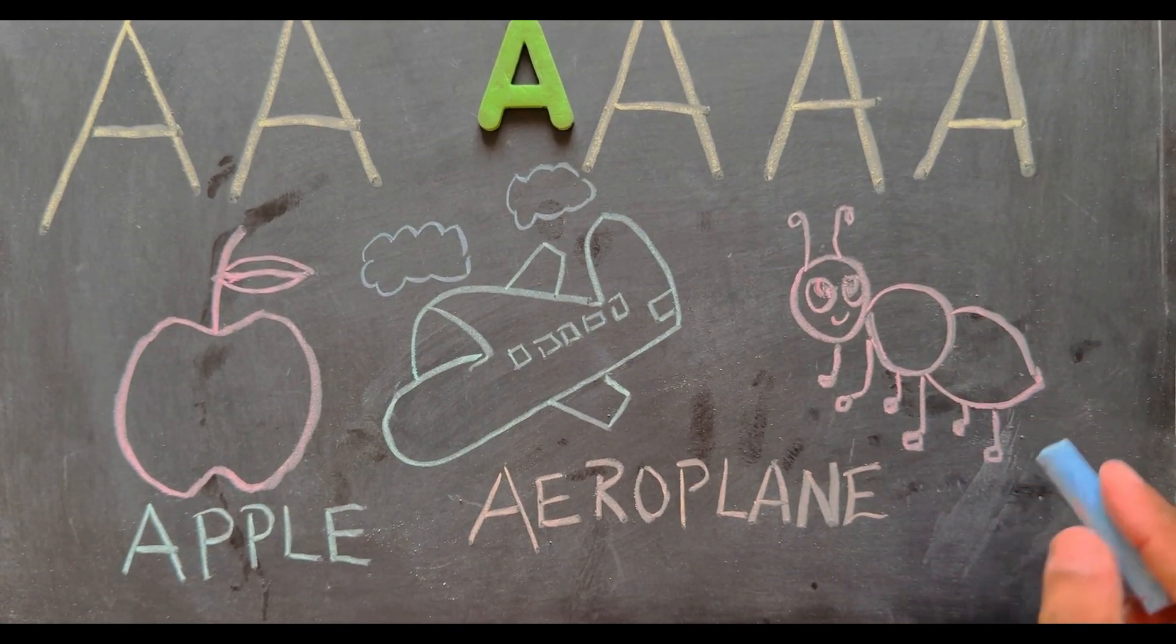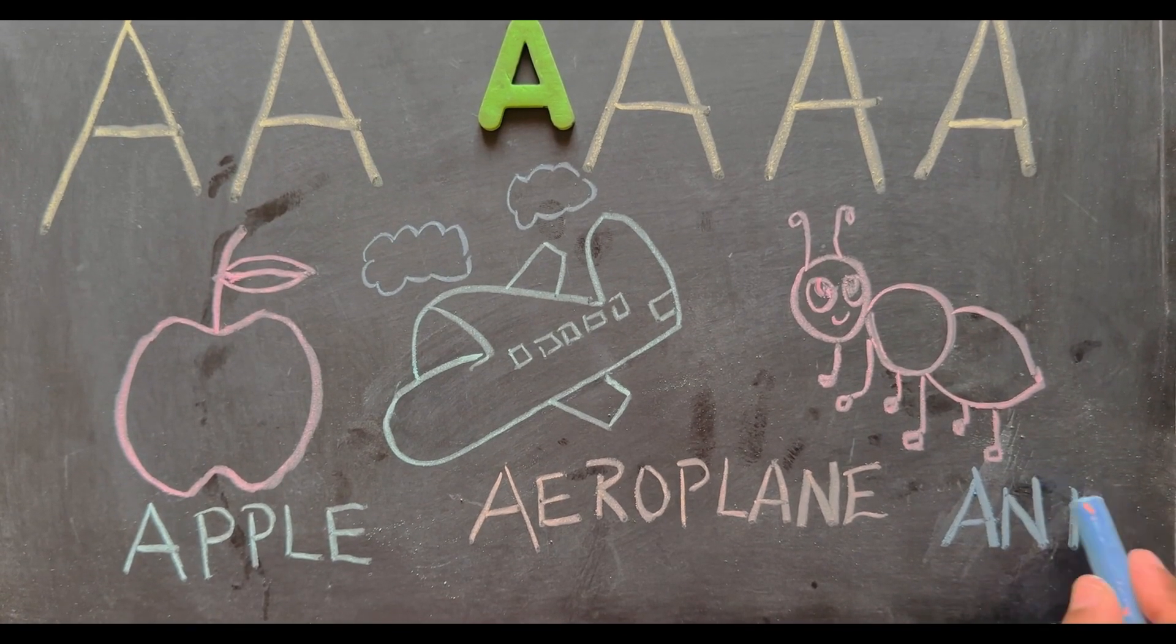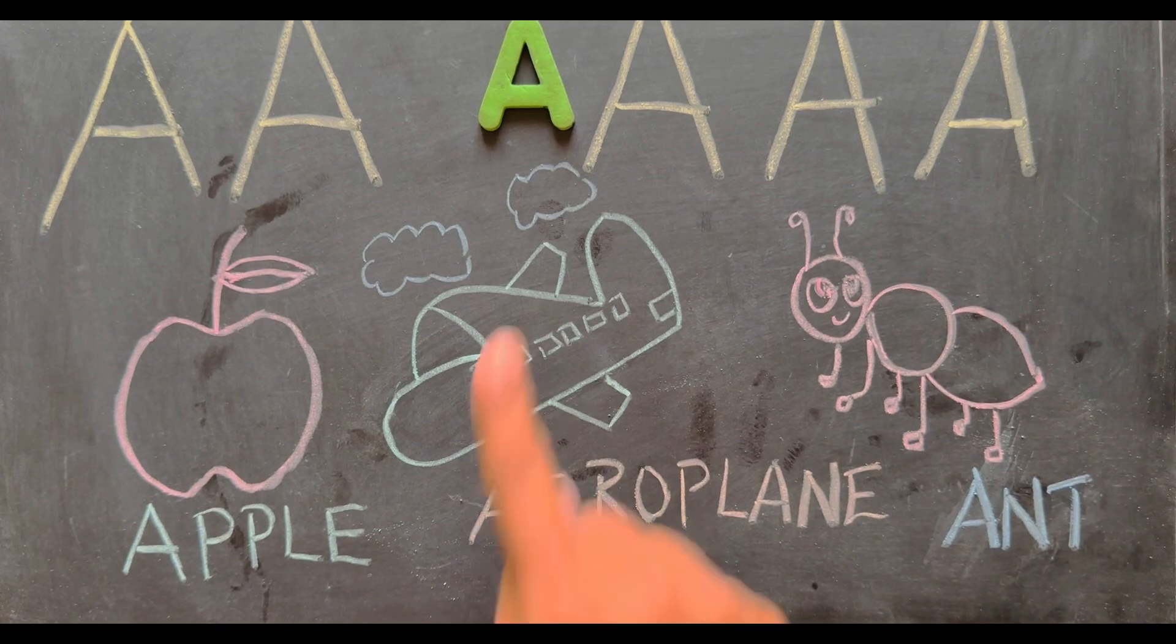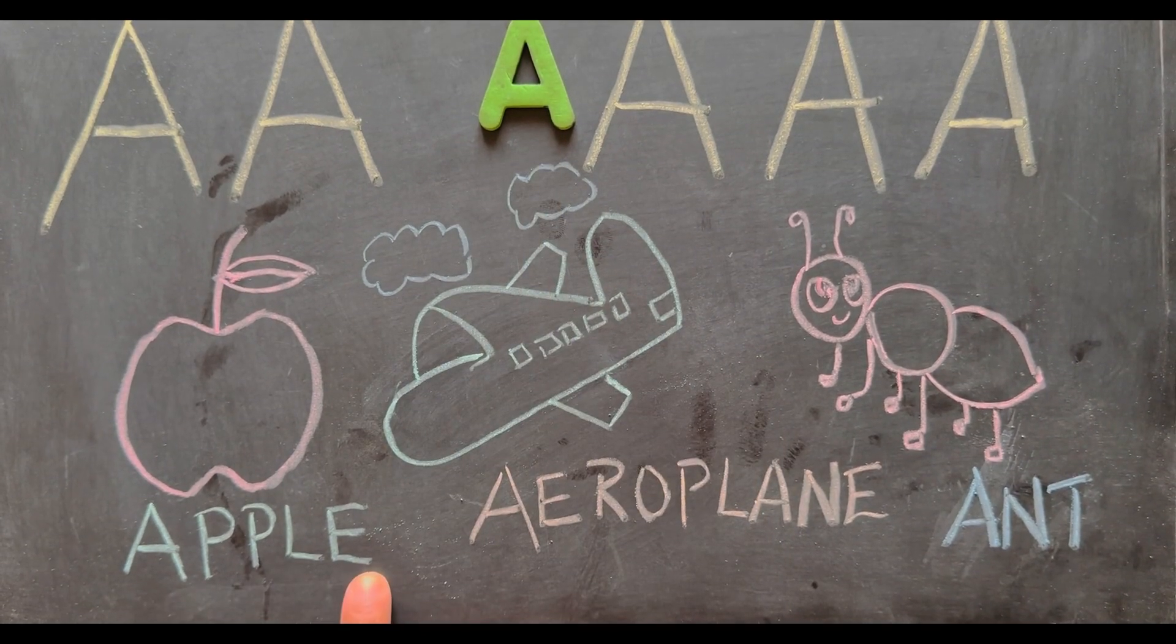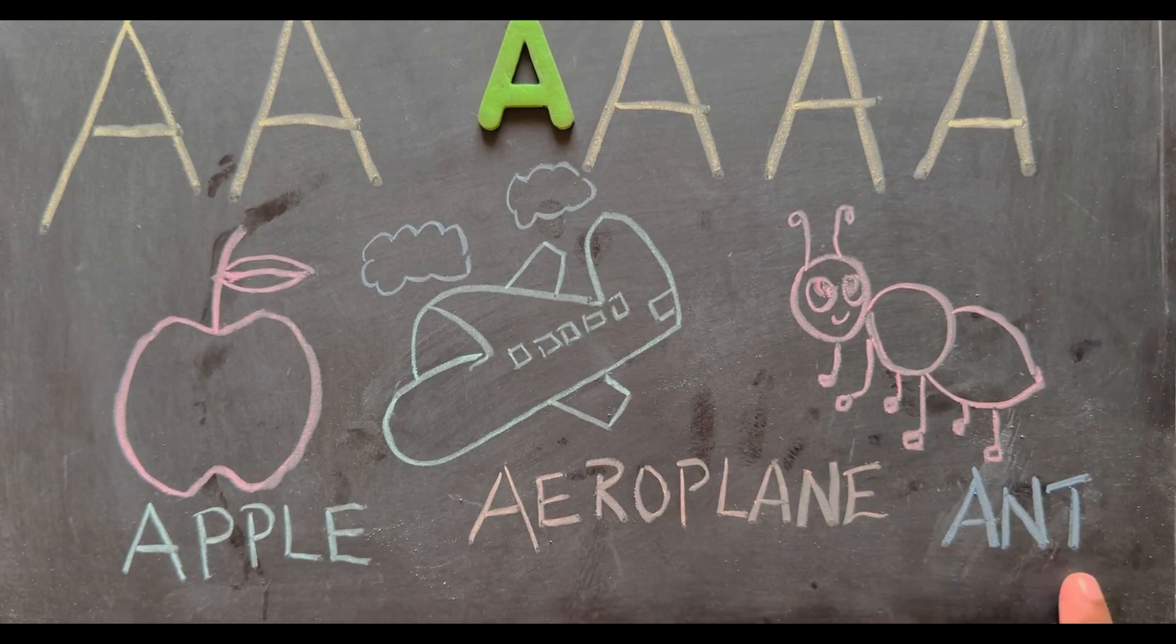What is this? It is an ant. A-N-T. Ant. A says apple, A says aeroplane, A says ant.